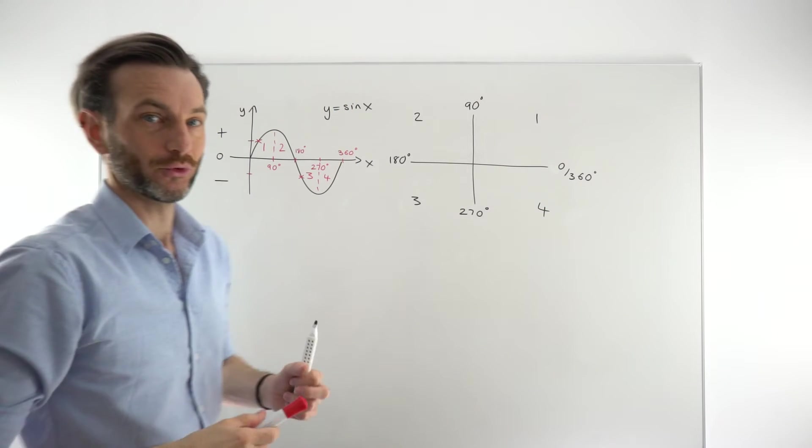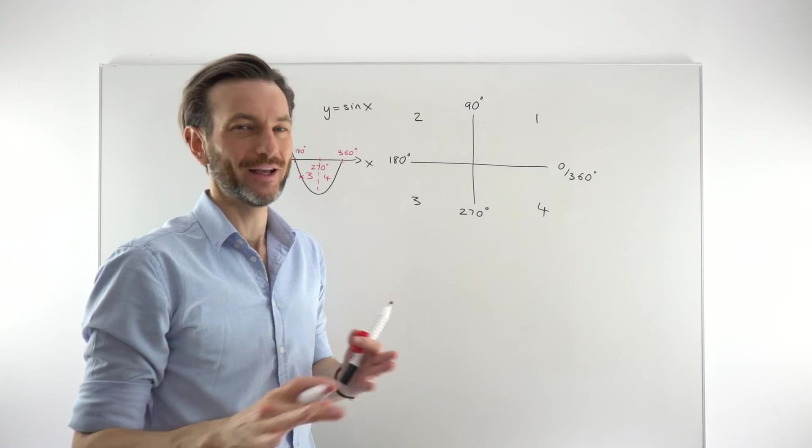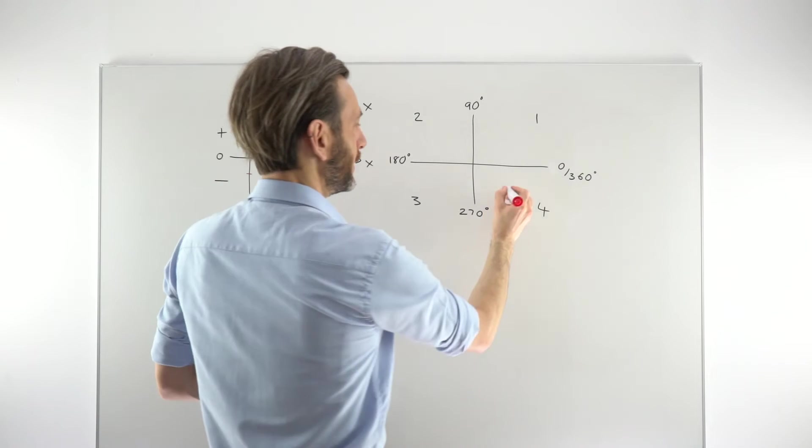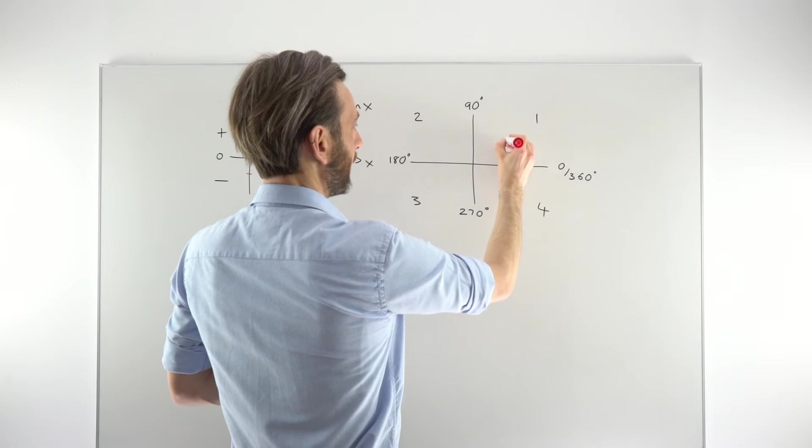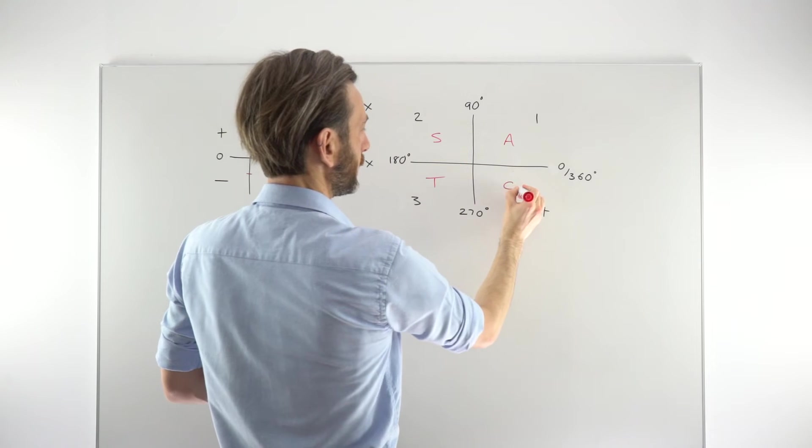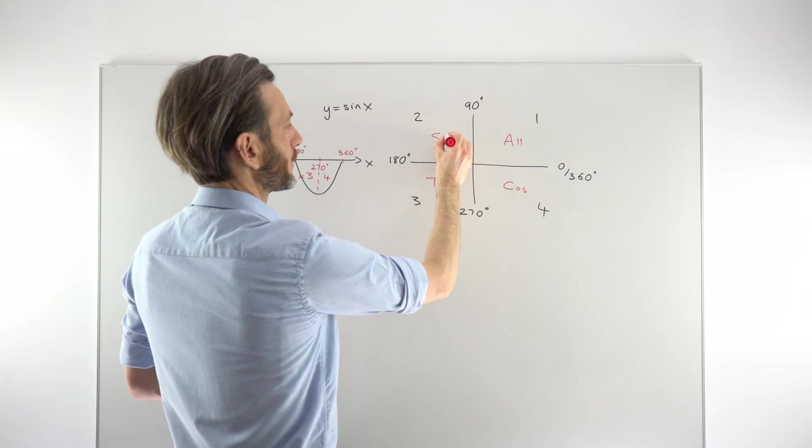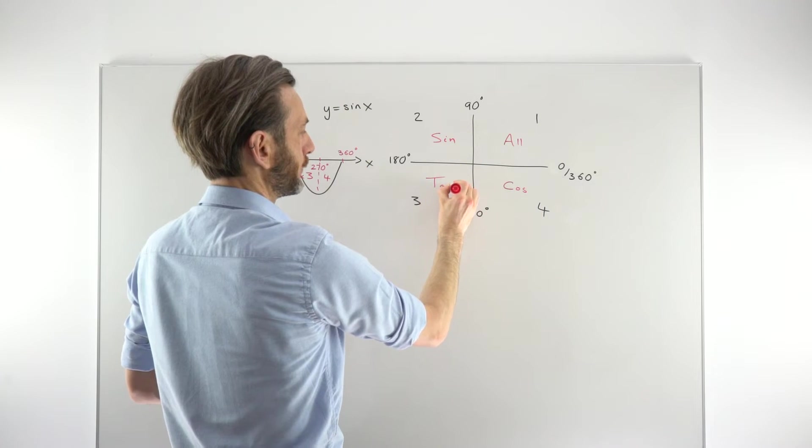But we put labels on the CAST diagram. And this is a confusing part at first. So if you don't get this straight away, it's fine. Everyone finds this difficult at first. So we label it CAST. That's where we get CAST from. C stands for cosine. A stands for all. I'll explain that in a moment. S stands for sine. And T stands for tan.